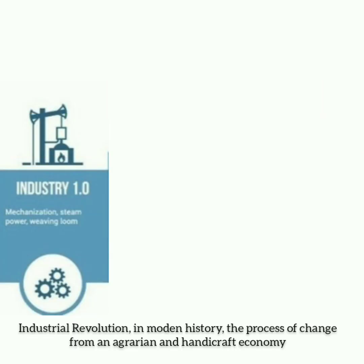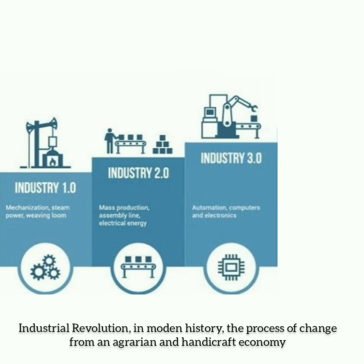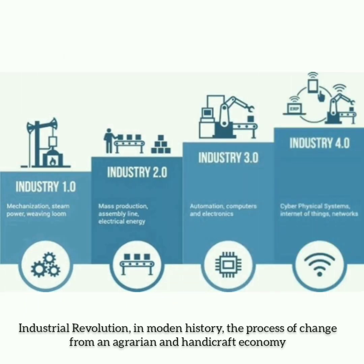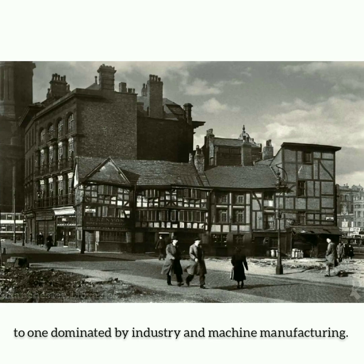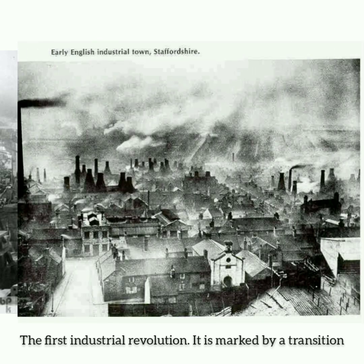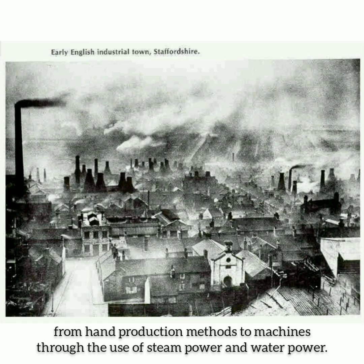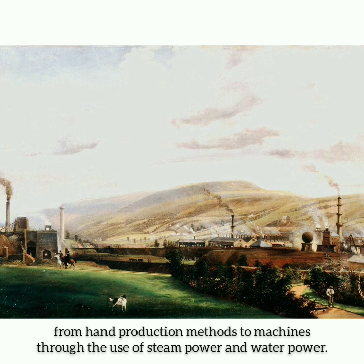The Industrial Revolution in modern history is the process of change from an agrarian and handicraft economy to one dominated by industry and machine manufacturing. The first industrial revolution is marked by a transition from hand production methods to machines through the use of steam power and water power.